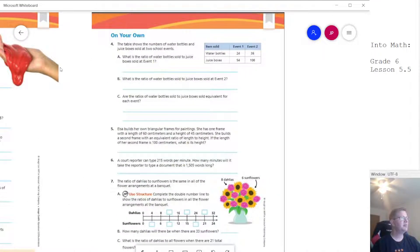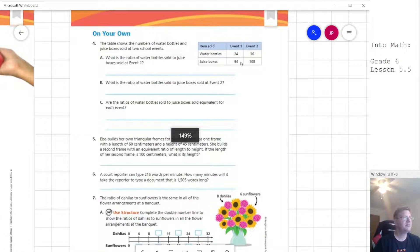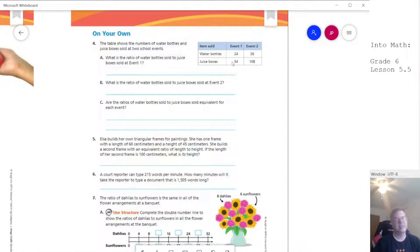Let's take a look at number four. So we want to find the ratio of water bottles sold to juice boxes at event one. Here's our 24 to 54 and then 36 to 108. And then we need to figure out, are they equivalent? The way that we can do that is to try to see if there's some kind of relationship.